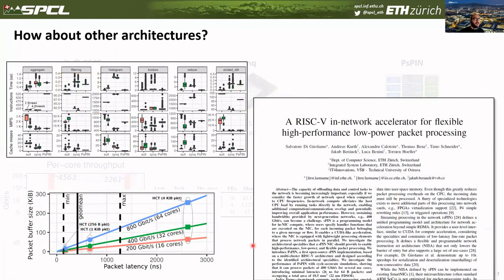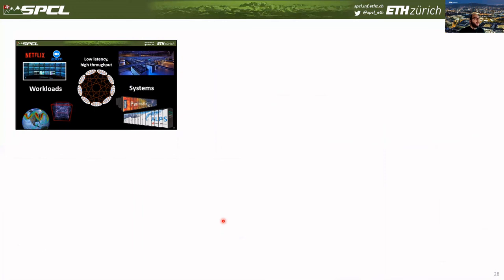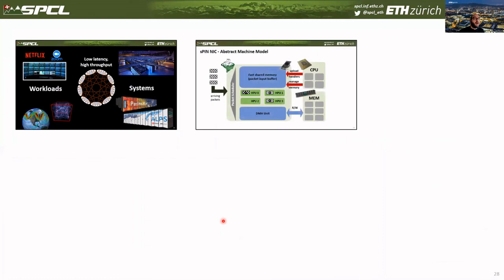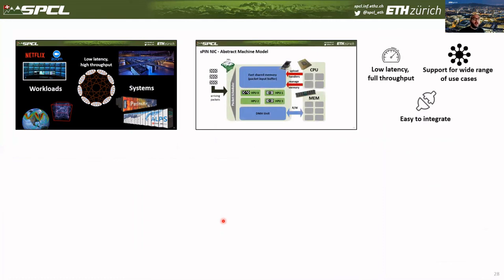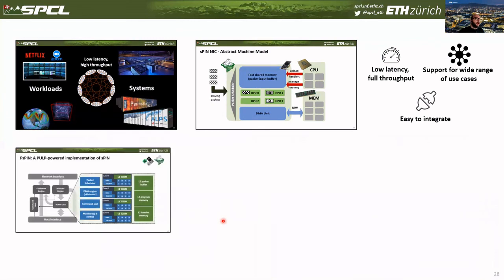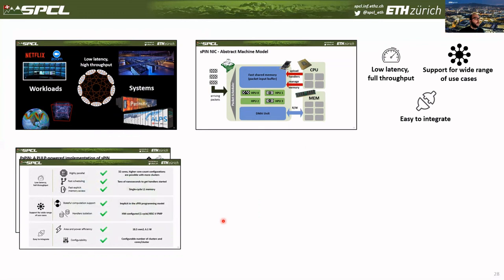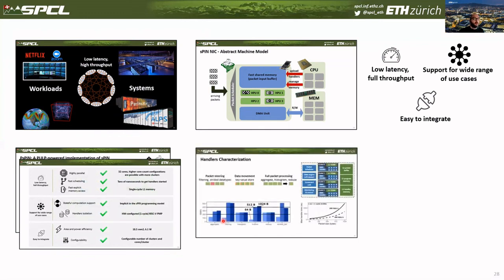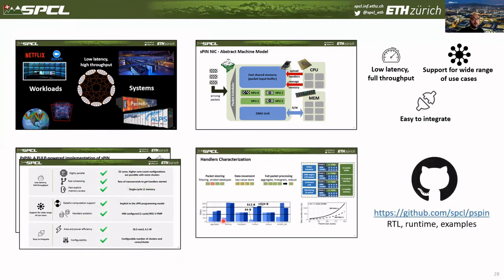The paper has many more details and insights about this analysis, so we invite you to check it out. To conclude: we highlight the importance of packet processing and show how SPIN provides a solution for flexible NIC programming; we define architectural principles for designing an accelerator implementing the SPIN programming model, which we believe can be generalized to any in-network compute solution doing packet processing; and we introduce PSPIN, an open-source hardware implementation of SPIN, showing how it satisfies all the principles and evaluating its performance under different use cases. PSPIN is available on GitHub with the RTL, runtime, and several examples. Contributions are welcome. Thank you for listening.